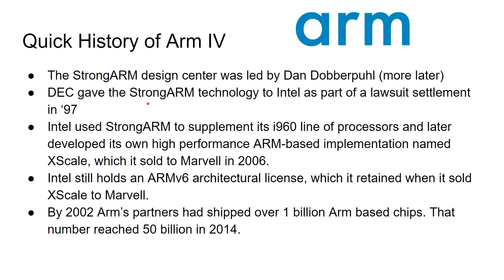Unfortunately, DEC gave the StrongARM technology to Intel as part of a lawsuit settlement in 1997. I remember coming into work that day and being told all work on the StrongARM project was stopping because it had been given to Intel. Intel used the StrongARM to supplement its i960 line of processors and later developed its own high-performance ARM-based implementation named XScale, which it sold to Marvell in 2006. Intel still holds an ARMv6 architectural license retained when it sold XScale. By 2002, ARM's partners had shipped over a billion ARM-based chips, and that number reached 50 billion in 2014.